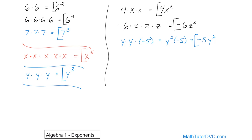Our last problem: what if you have 7 times x times negative 2 times x? How would you write this as an exponent? Notice everything is multiplied together — 7, x, negative 2, and another x. The x's are multiplied together, so we write that as x squared. The numbers are multiplied together: 7 times negative 2 is negative 14. And x times x is x squared. So you write it as negative 14x squared — the number is always written in front of whatever the variable has as its exponent.